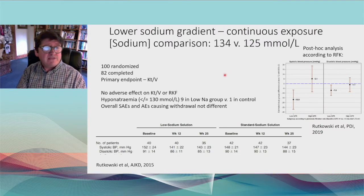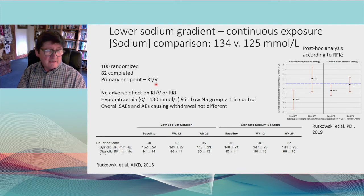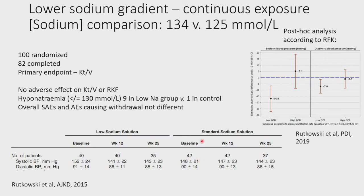The second study took a different approach: a more modest reduction in dialysate sodium to 125 millimoles per litre, given throughout the 24-hour exchange. Again, 100 patients were randomized; the primary endpoint was KT/V, not blood pressure. A subsequent post-hoc analysis suggested that in patients with lower residual kidney function — where it is hard to demonstrate an effect on sodium removal when much residual function remains — there was a significant reduction in blood pressure.